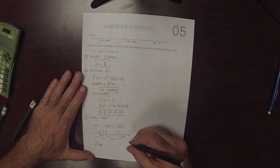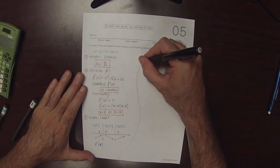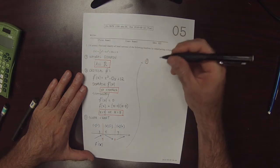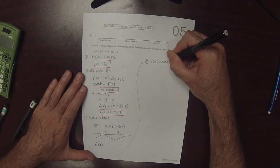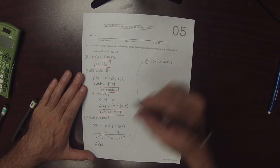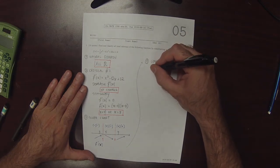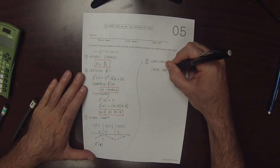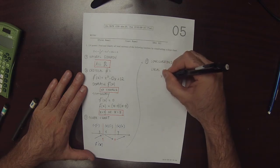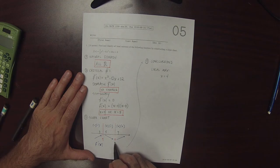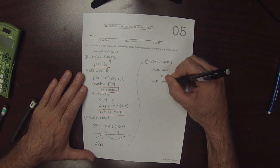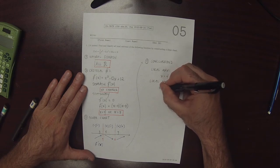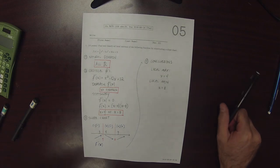And so now we can make our conclusions. So x equal to 4 is a local maximum. And x equal to 8 is a local minimum. And there are no other local extrema. And that's the answer to the exercise.